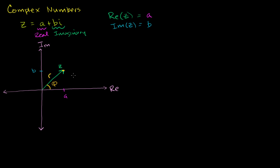Let's think about how we would actually calculate these values. r, which is the modulus or magnitude, is denoted as the absolute value of z. We have a right triangle here — this side has length b, and the base has length a. So to calculate r, we use the Pythagorean theorem: r squared is equal to a squared plus b squared, or r is equal to the square root of a squared plus b squared.